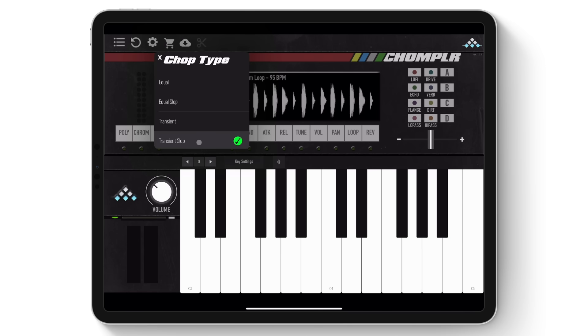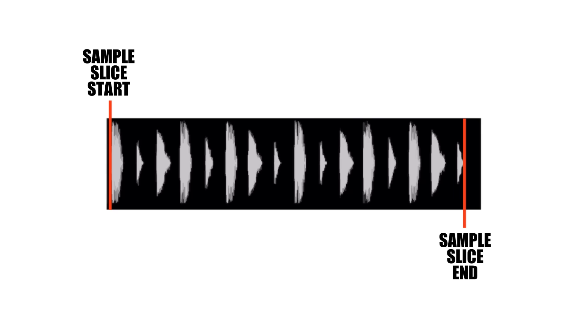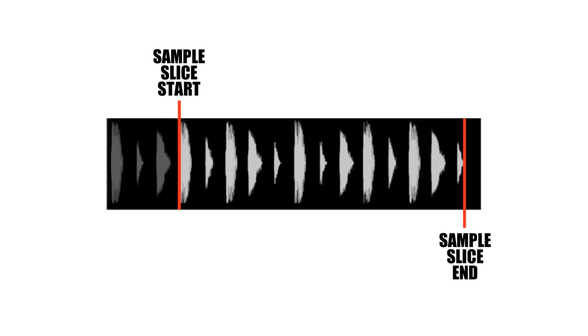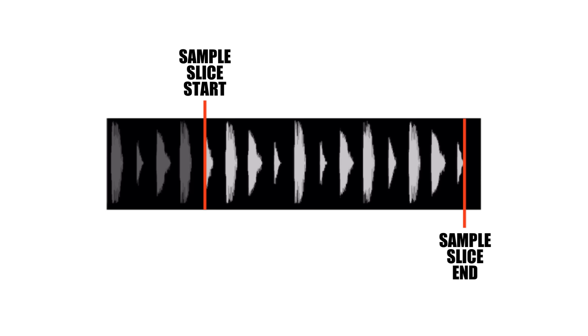Transient Slot slices the sample at detected transients for the start points. The slice endpoint is fixed to the sample end, similar to Equal Slot. These can be manually edited if required.